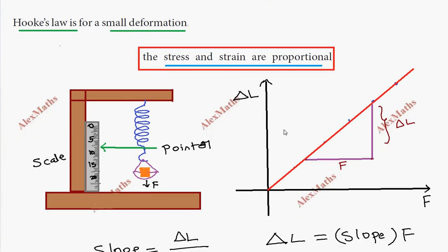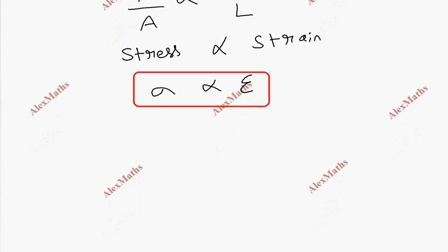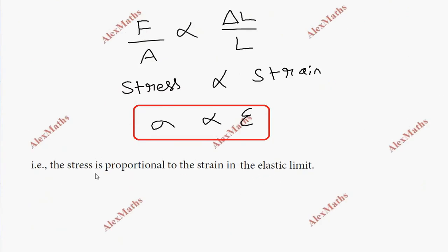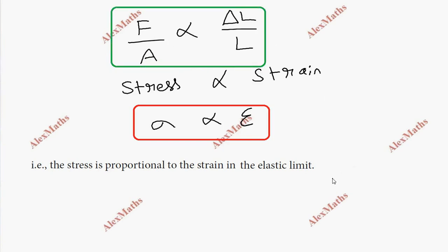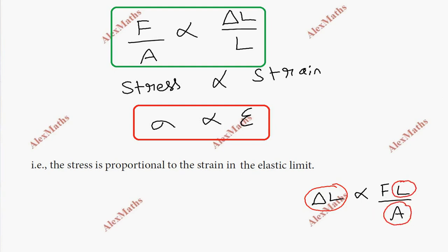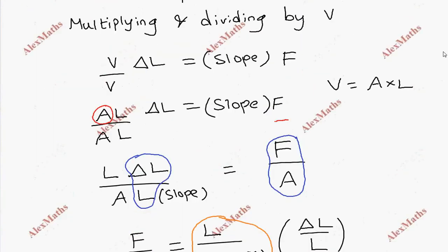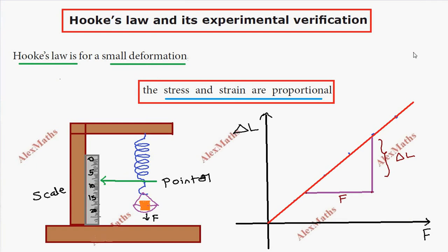This experimental verification is valid for small deformation, that is, within the elastic limit. Within the elastic limit, stress is proportional to strain. By measuring different values of force, recording different elongations, and plotting the graph which gives a straight line through the origin, we derive and verify that stress is proportional to strain — this is Hooke's Law.